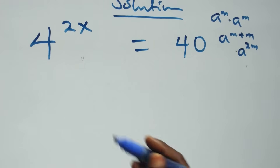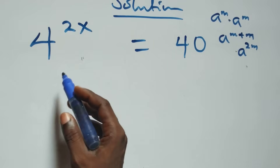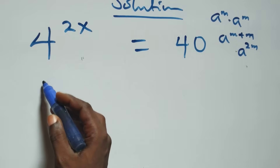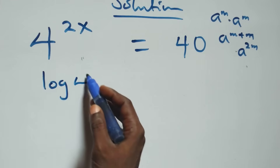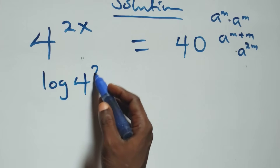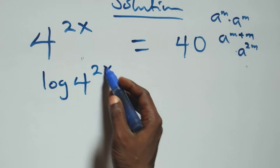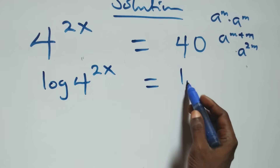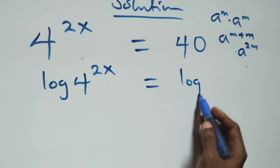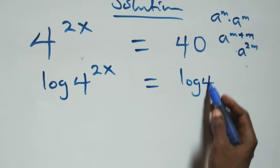The next step: we take the log on both sides, so we have log of 4 raised to power 2x equals to log 40.